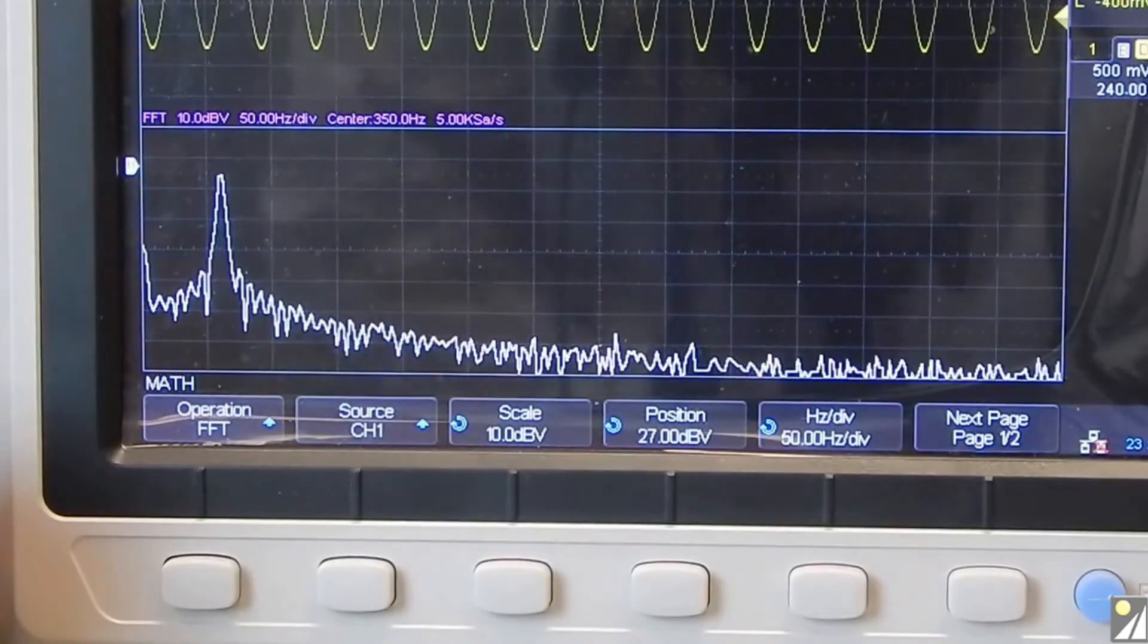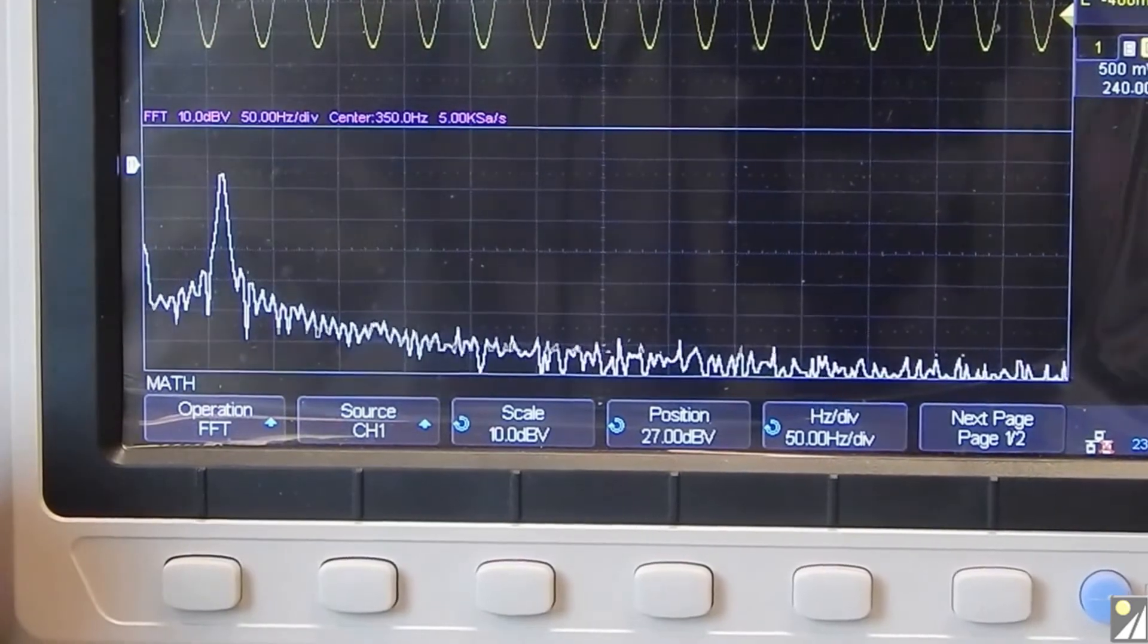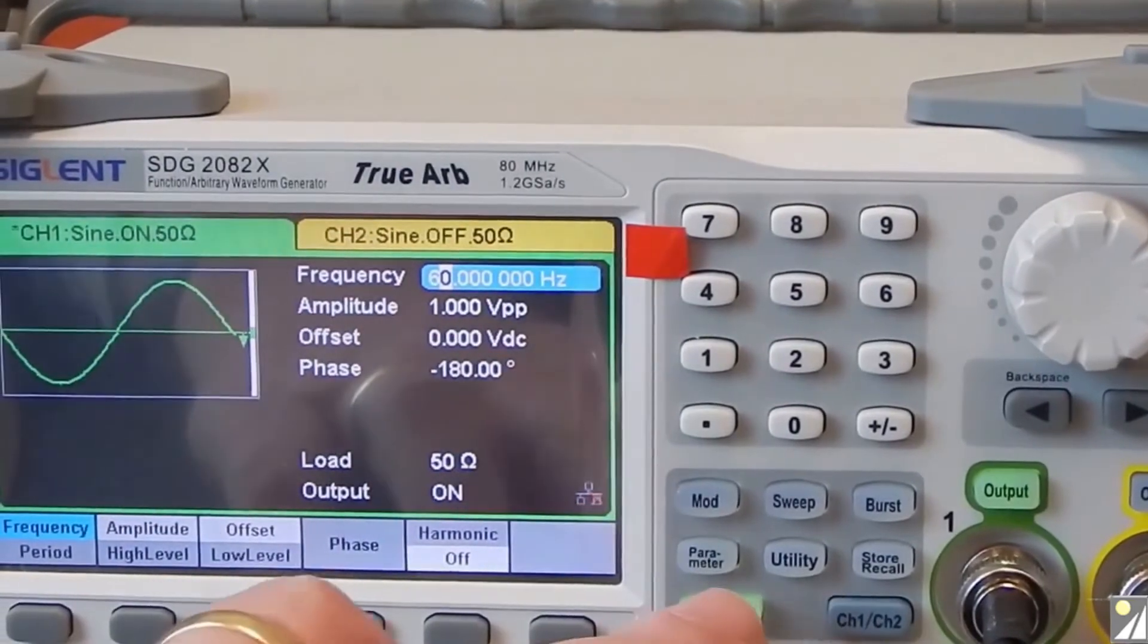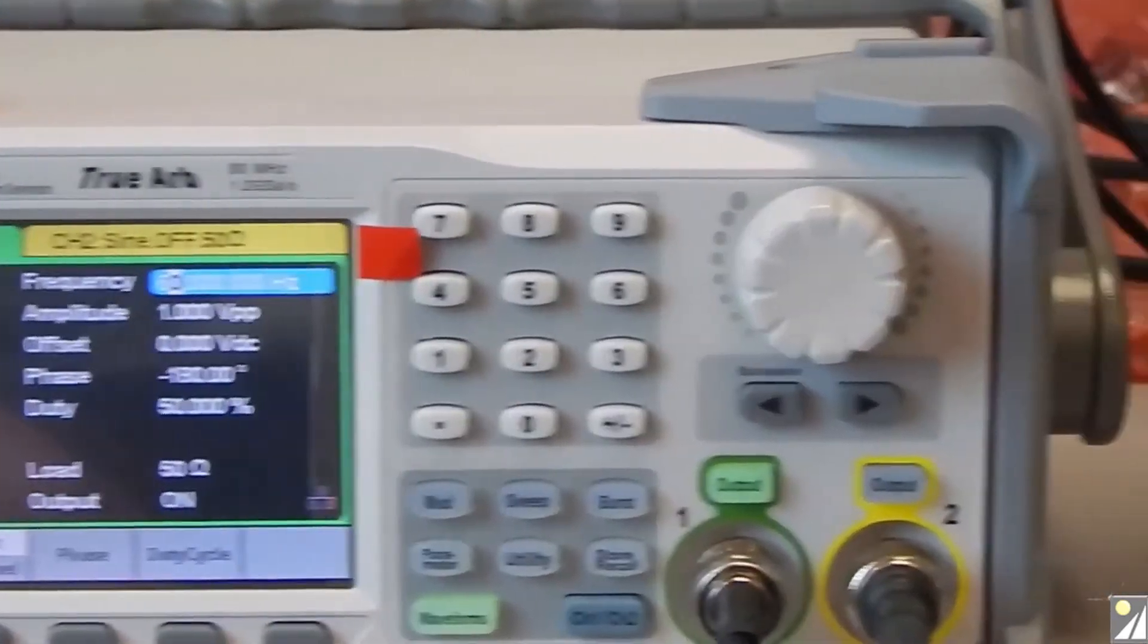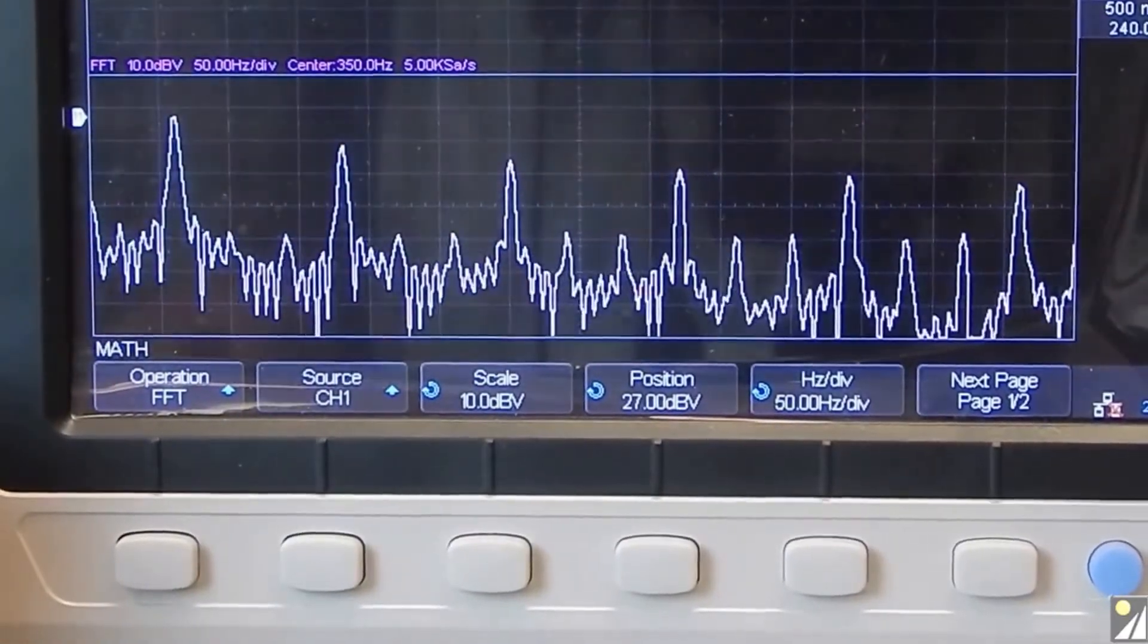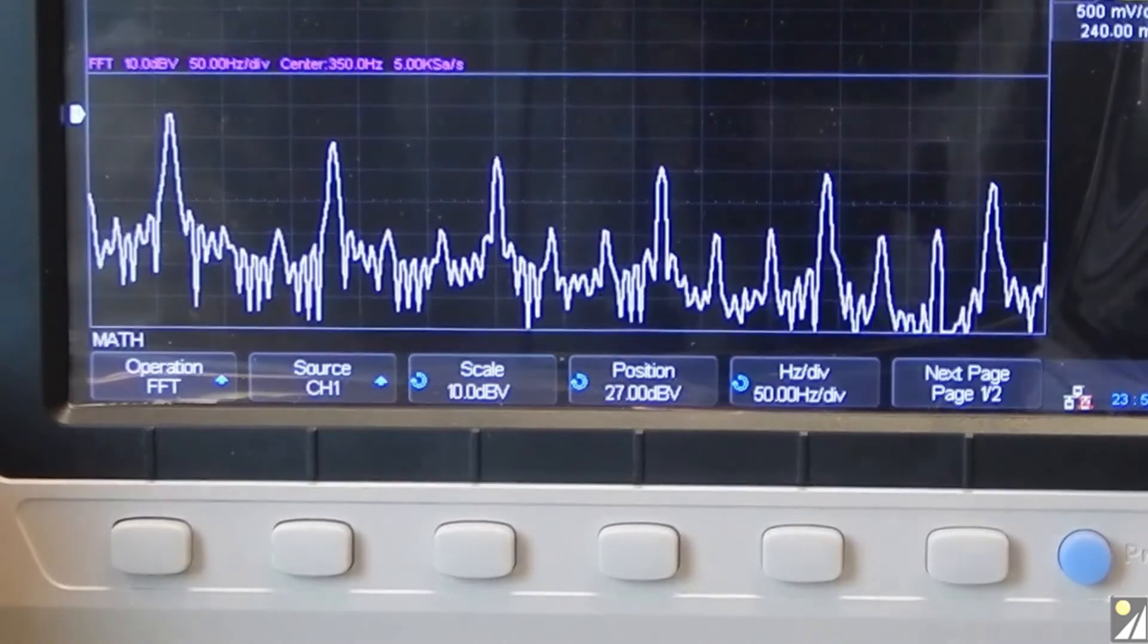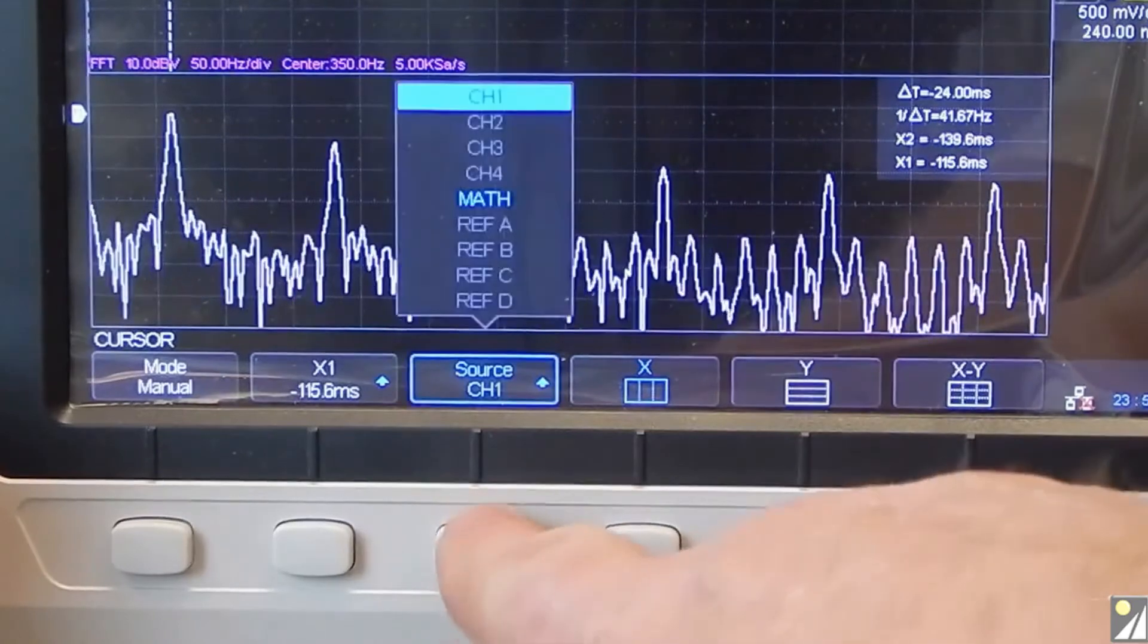So we could change that vertical scale as well and get more dynamic range. Now let's use a little more realistic example. So instead of the sine wave, let's go to a square wave so we can get some nice harmonics here. And sure enough, there we go. So that should be a 60 hertz fundamental with odd harmonics going for quite a while.